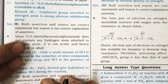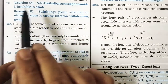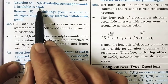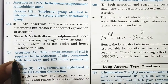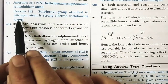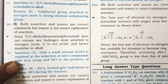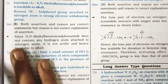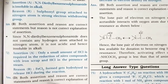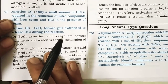Question 71: N,N-diethylbenzenesulfonamide is insoluble in alkali. The assertion is correct. The sulfonyl group attached to nitrogen is a strong electron-withdrawing group, but the correct explanation is that no acidic hydrogen is present on the nitrogen atom; therefore N,N-diethylbenzenesulfonamide is insoluble in alkali.